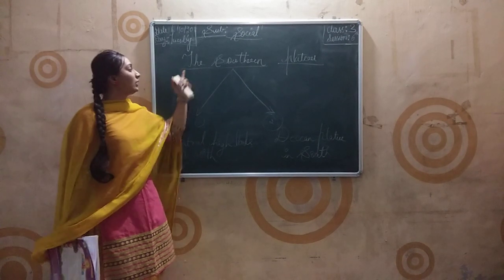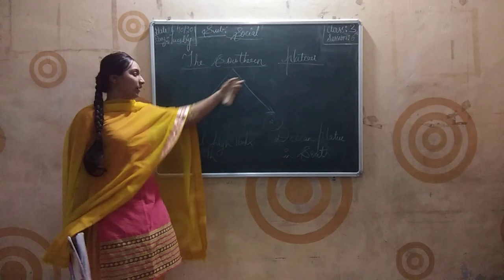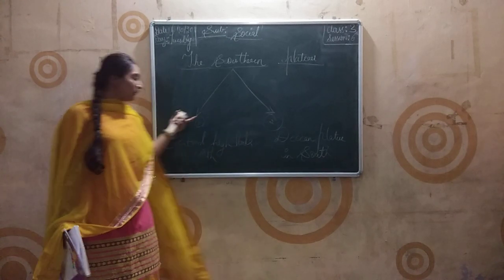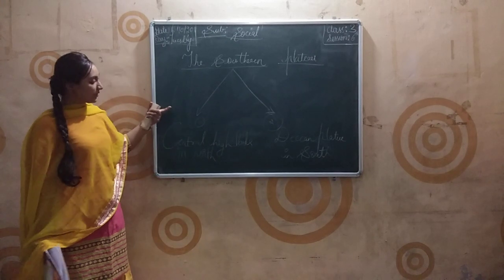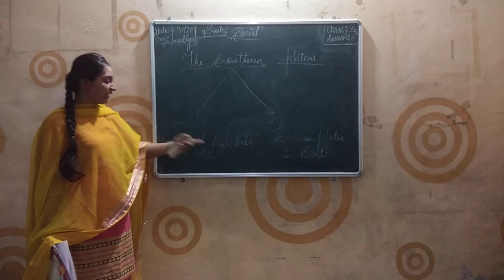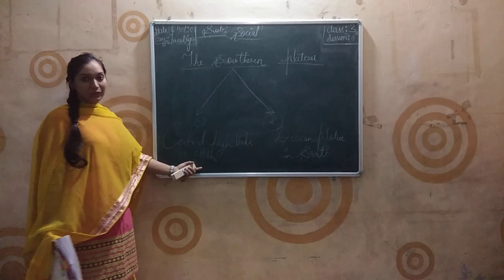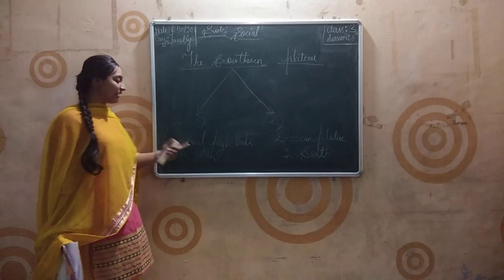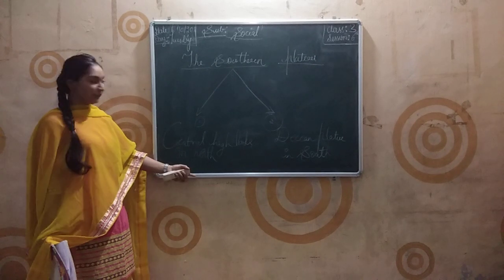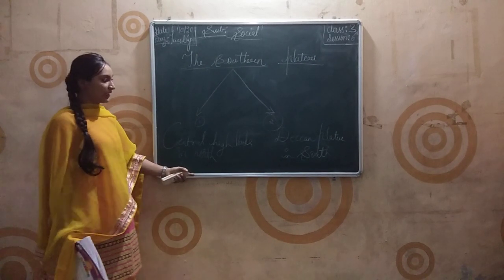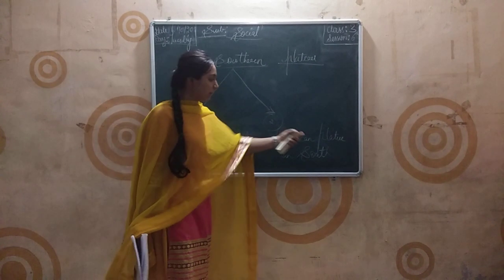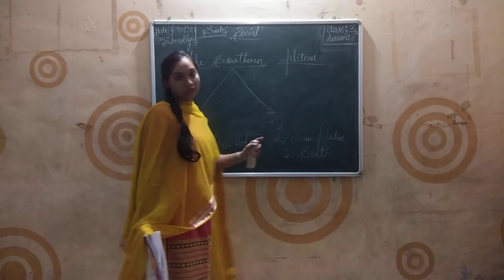The southern plateau is divided into two parts. The first part is divided by central highlands in the north - there are central highlands in the central plateau in the north side. The second part is divided into the Deccan plateau in the south.